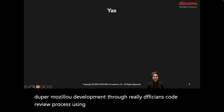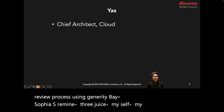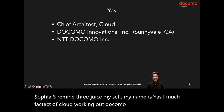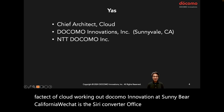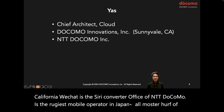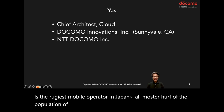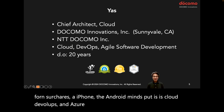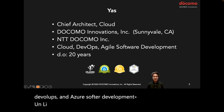So first, let me introduce myself. My name is Yas. I'm a chief architect of cloud working at Docomo Innovations in Sunnyvale, California, which is a Silicon Valley office of NTT Docomo. Docomo is the largest mobile operator in Japan — almost half of the Japanese population uses Docomo smartphones such as iPhone and Android. My expertise is cloud, DevOps, and agile software development.